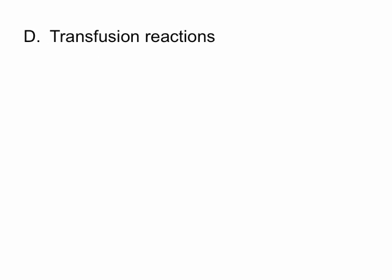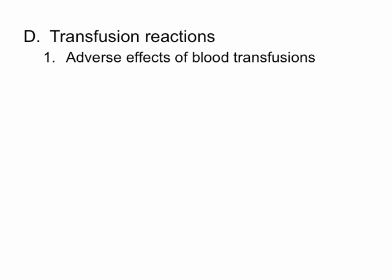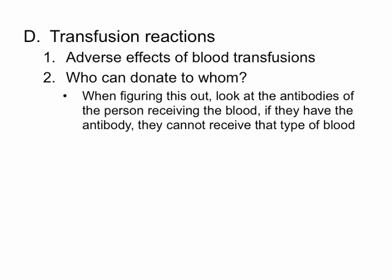A transfusion reaction is an adverse effect of blood transfusions — meaning we've been given the wrong type of blood. The blood is going to clot, and unfortunately death is most likely going to happen. So it's important to know who can donate to whom. When you figure this out, look at the antibodies of the person receiving the blood. If they have the antibody, they cannot receive that type of blood. For example, if a person has type A antibodies, they absolutely cannot get type A blood.